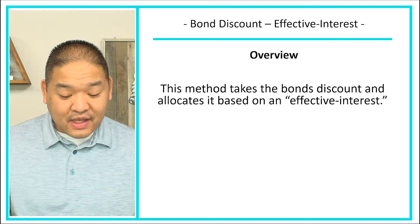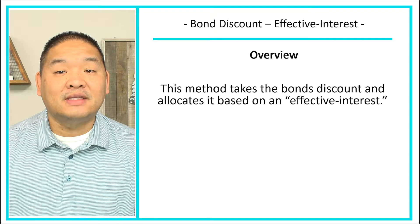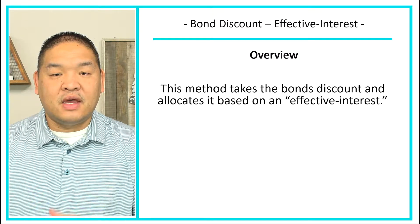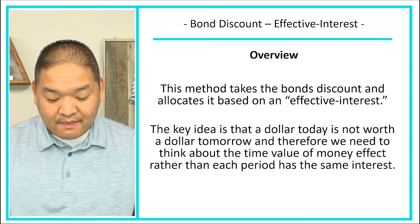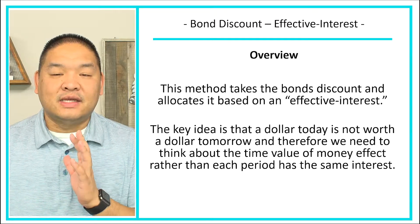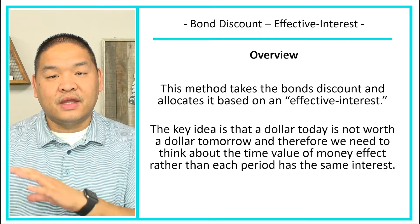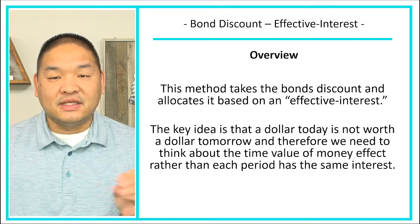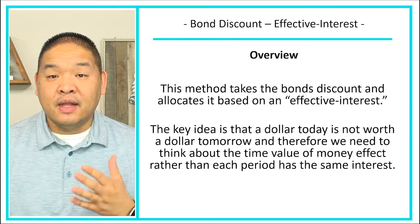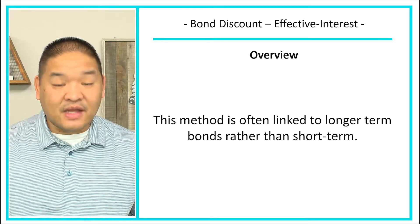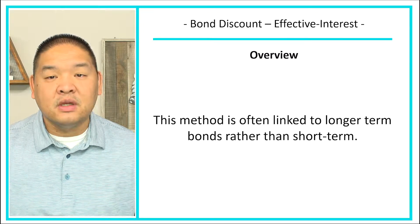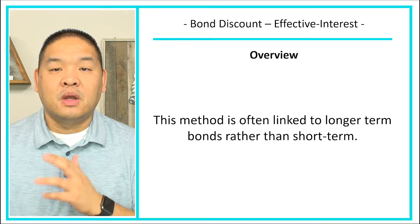This method takes the bond discount and allocates it based on effective interest rather than the straight-line method. The key idea is that a dollar today is not necessarily worth a dollar tomorrow because of this time value of money difference, so we have to use a different method than the straight-line method.